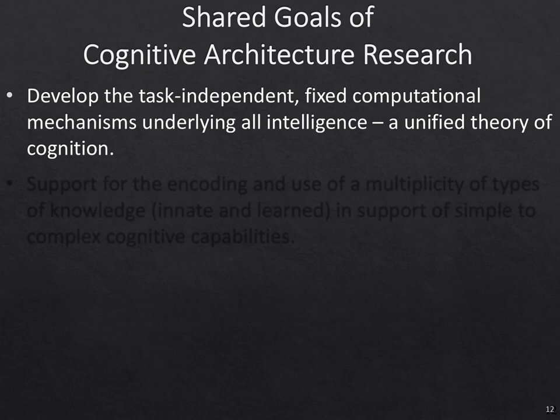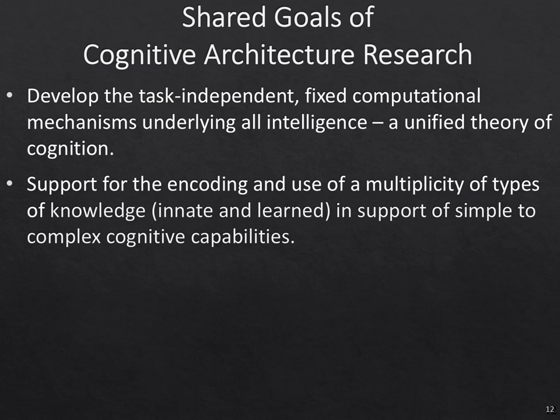The shared goals of cognitive architecture are to develop these task-independent fixed computational mechanisms that underlie all intelligence — a unified theory of cognition. Not all cognitive architectures are designed to be as universal as this; some are for subsets of tasks. But the idea is not to build a system for a single task, but to build one that, based on the knowledge it has, can do different tasks. These architectures support the encoding and use of a multiplicity of types of knowledge — both innate and learned — supporting both simple and complex cognitive capabilities.